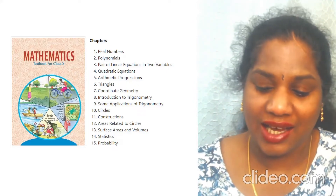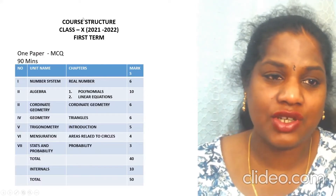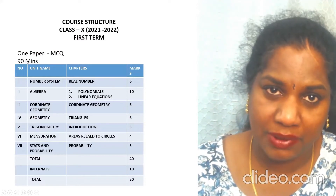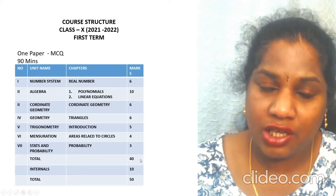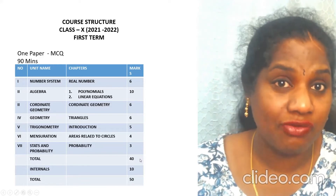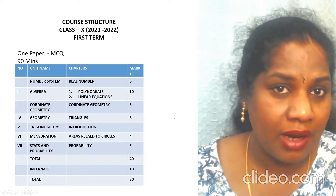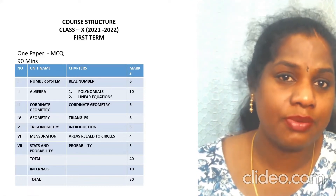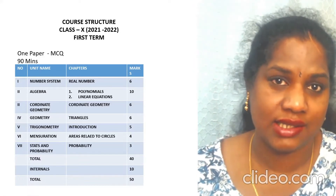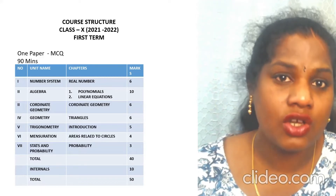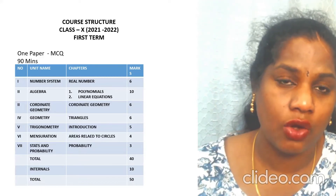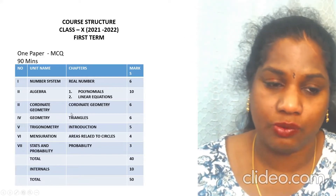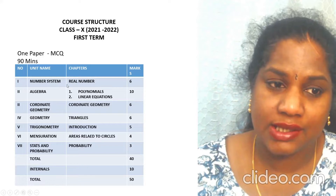The structure of Term 1 is a 90-minute question paper with a total of 40 marks. An additional 10 marks come from your school for internals, projects, class tests, and assignments. So 40 marks is what's covered in the Term 1 exam. Now let's look at what topics are coming.